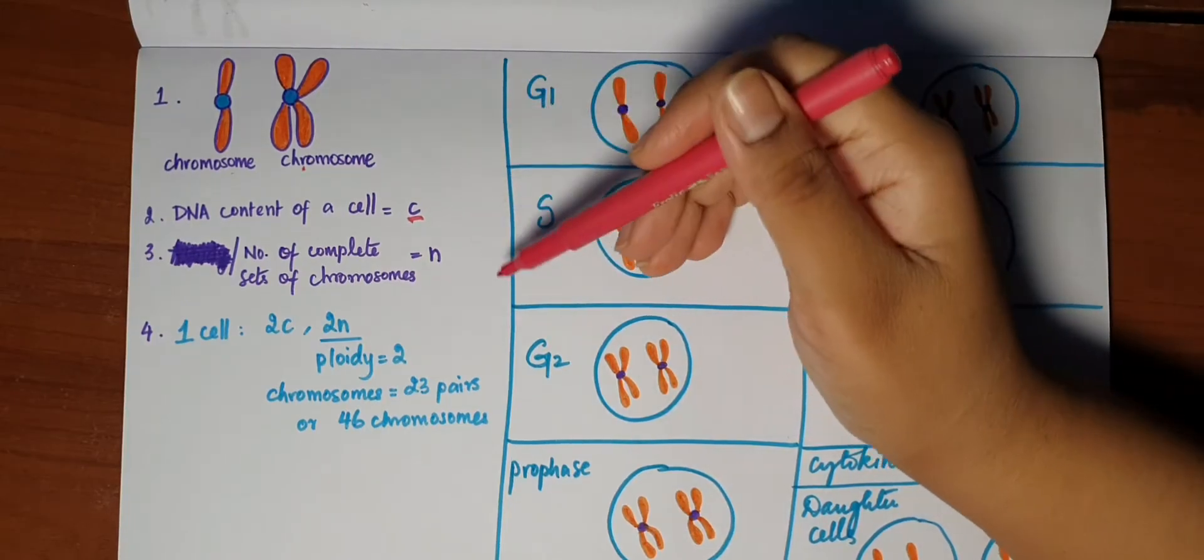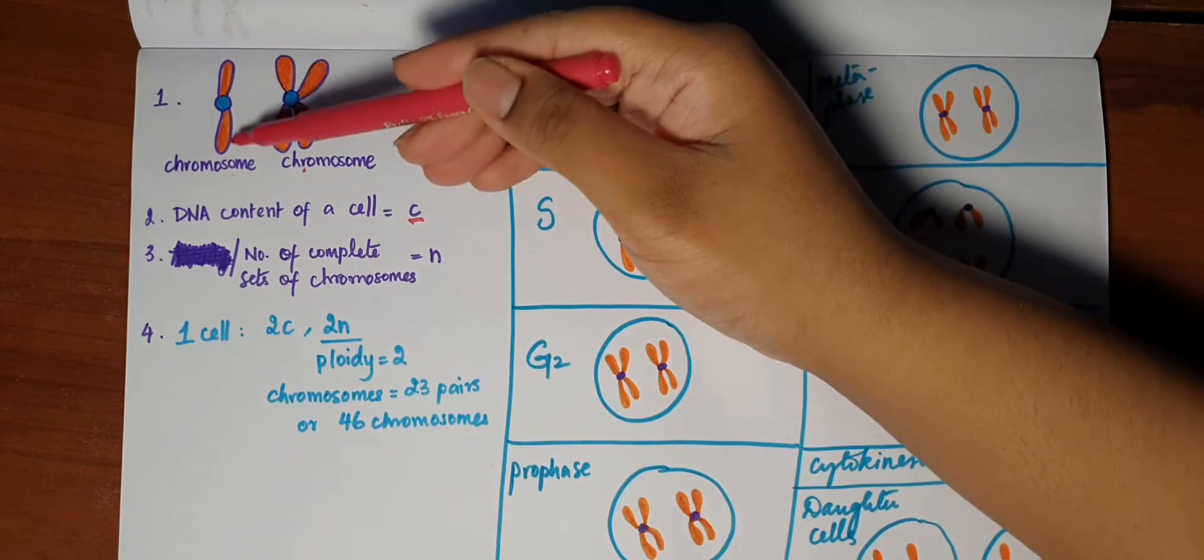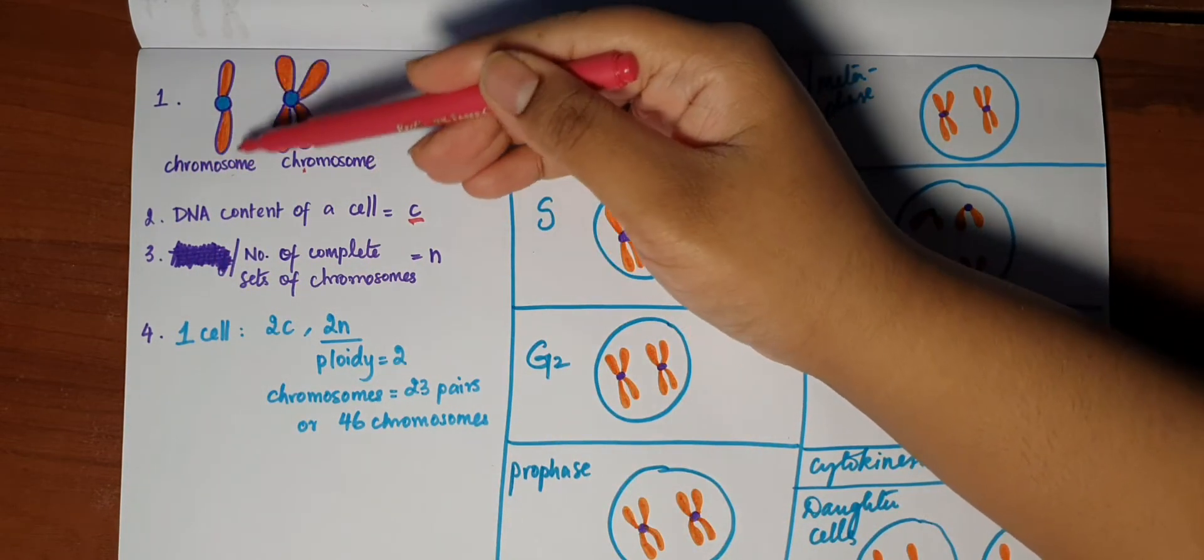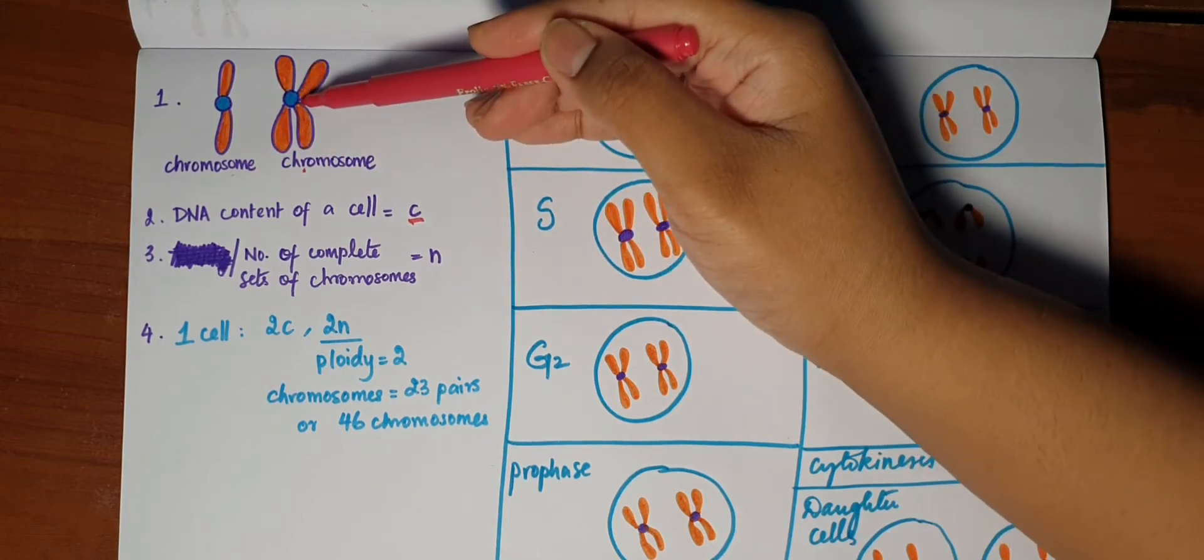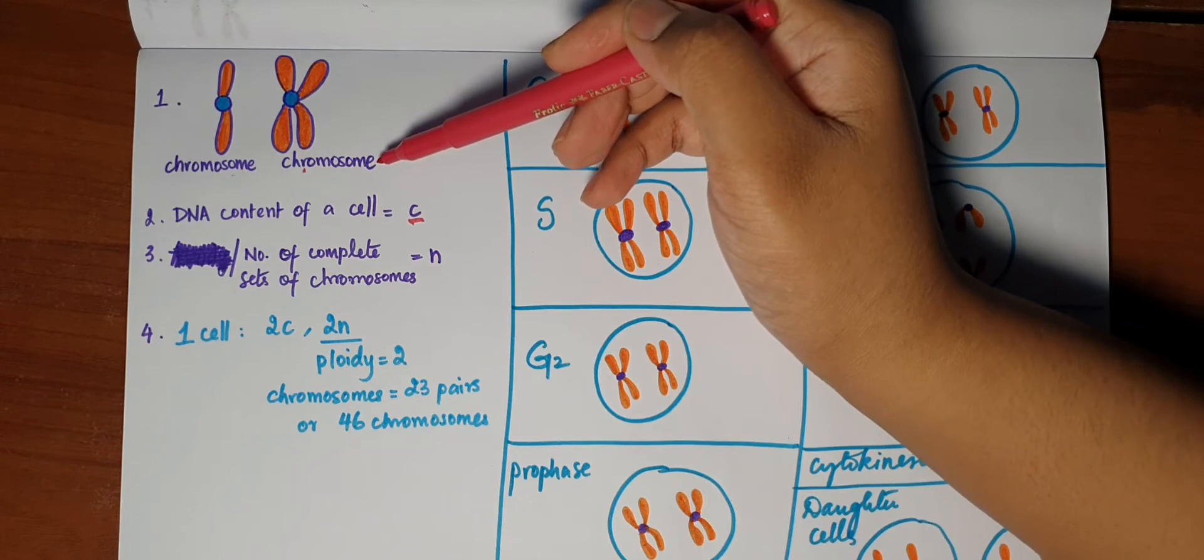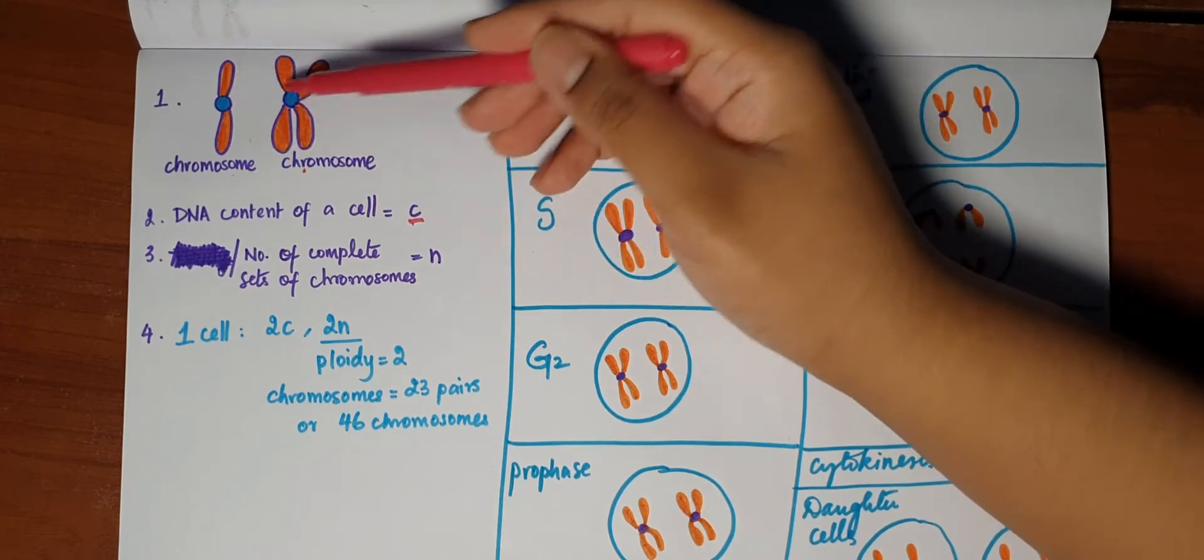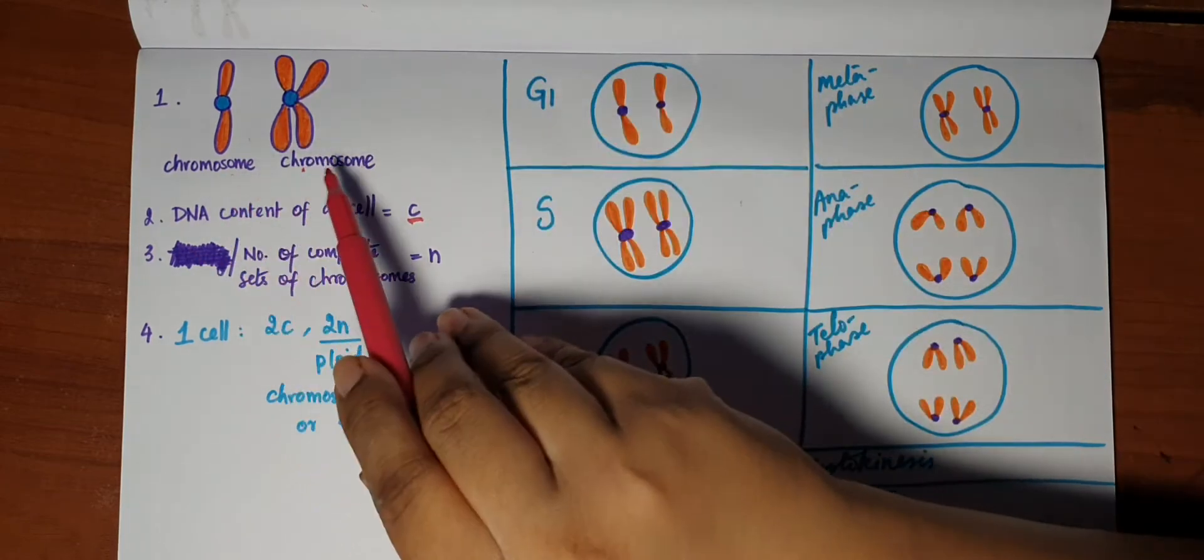We'll start by seeing four important points. First, this is a centromere attached to one chromatid. This is a chromosome. This is another centromere attached to two sister chromatids. This is also a chromosome. So irrespective of the number of chromatids the centromere is attached to, it's considered a chromosome.